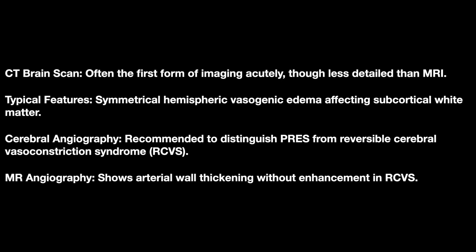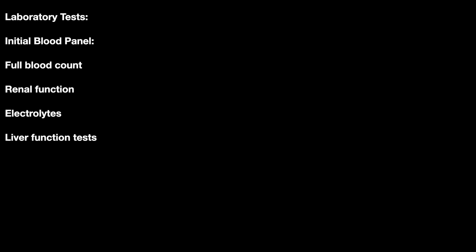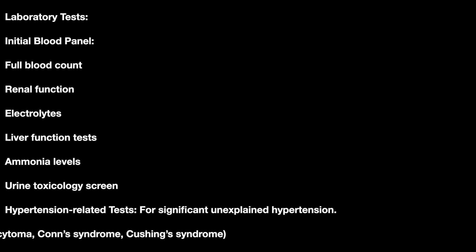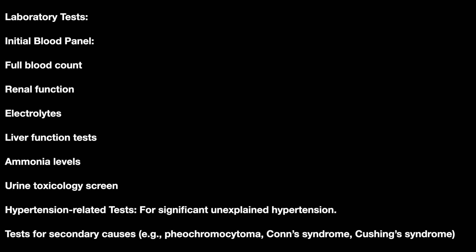It is recommended to distinguish PRES from reversible cerebral vasoconstriction syndrome; a cerebral angiogram can be done. MR angiography shows arterial wall thickening without enhancement in RCVS. For lab tests, the initial blood panel should include full blood count, renal function, electrolytes, liver function tests, ammonia levels, urine toxin screen, and hypertension-related tests for significantly unexplained hypertension, including secondary causes like pheochromocytoma, Conn syndrome, and Cushing syndrome.